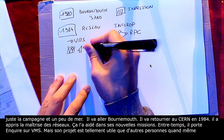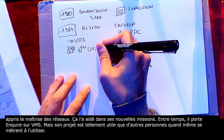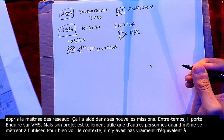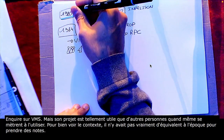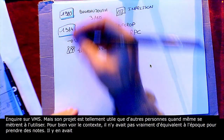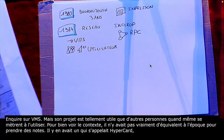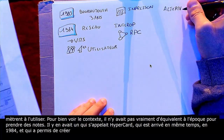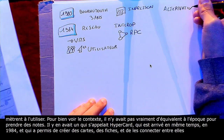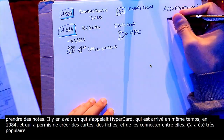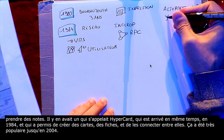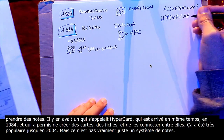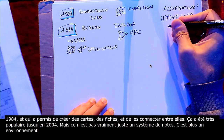Pour bien voir le contexte, il faut savoir qu'il n'y avait pas vraiment d'équivalent à l'époque pour prendre des notes de cette manière-là. Il y en avait bien un qui s'appelle HyperCard, qui arrivait exactement à la même époque, en 1984, et qui permettait de créer des sortes de cartes, de fiches, et de les connecter entre elles. C'est très complet, ça a été très populaire jusqu'à la fin de sa commercialisation en 2004. Mais ce n'est pas vraiment un système de notes, c'est plus un environnement de développement complet, qui n'est pas vraiment de l'hypertexte.